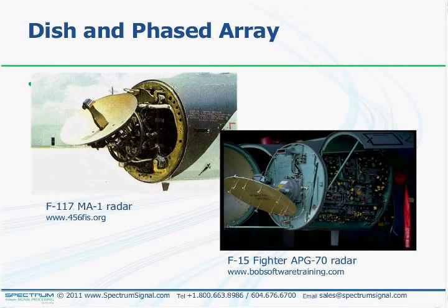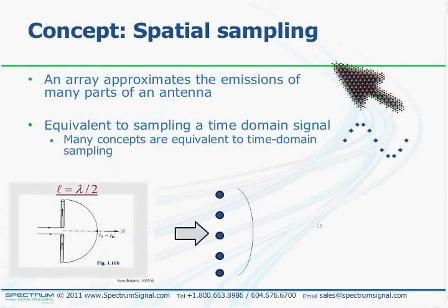The next concept is spatial sampling. An array approximates the emissions of many parts of the antenna. The beam pattern depends on the current distribution; the array approximates that by using small antennas to produce samples at various points along the equivalent antenna—analogous to sampling in the time domain. A key advantage of the array is that we can choose the current in each antenna element as we see fit, including its phase and amplitude, giving more flexibility in achievable beam patterns.